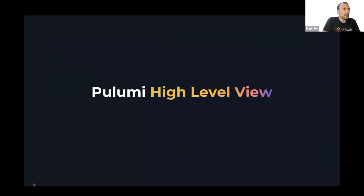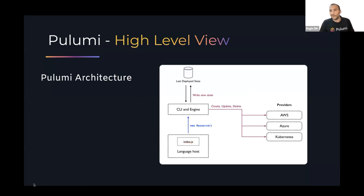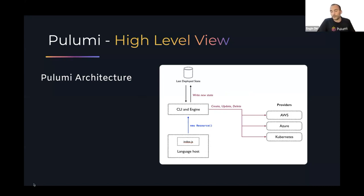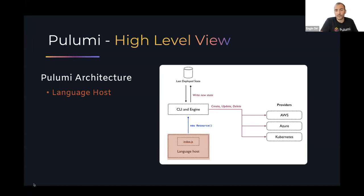Let me give a high-level overview of the Pulumi architecture. Think about Pulumi as a microservice architecture where all services run on your local machine, communicating heavily via gRPC. You choose a language — in our example, Go — and say 'pulumi up'. The CLI detects the language, starts the Go language host, and communicates with the CLI to determine what resources and commands are being executed.